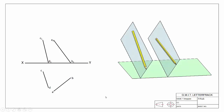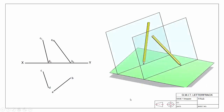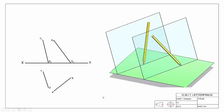What we'll do then is look at how to find the view where we see the two lines as parallel and how to find the traces of those parallel planes. We'll start by looking at our 3D setup — here we have our same pencils and here we have our two sheets of glass, representing the two planes.